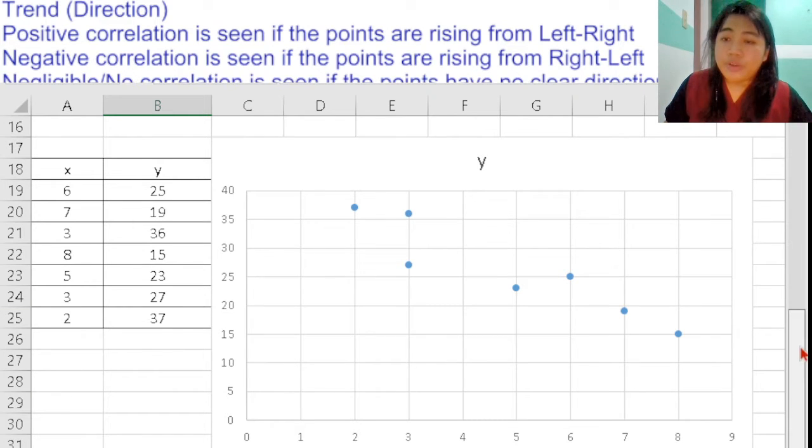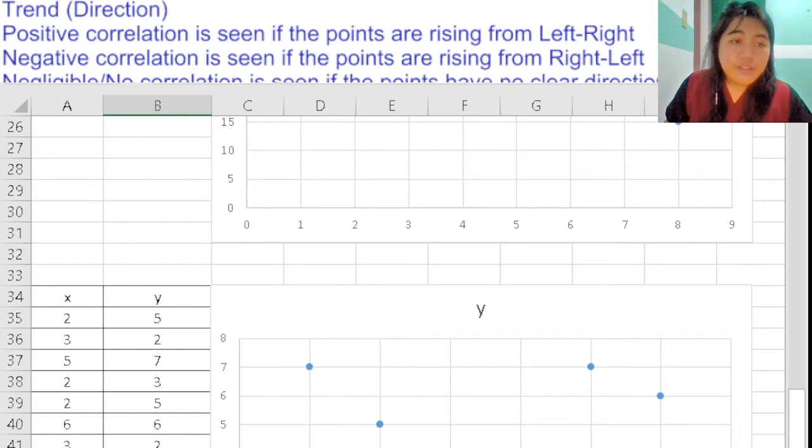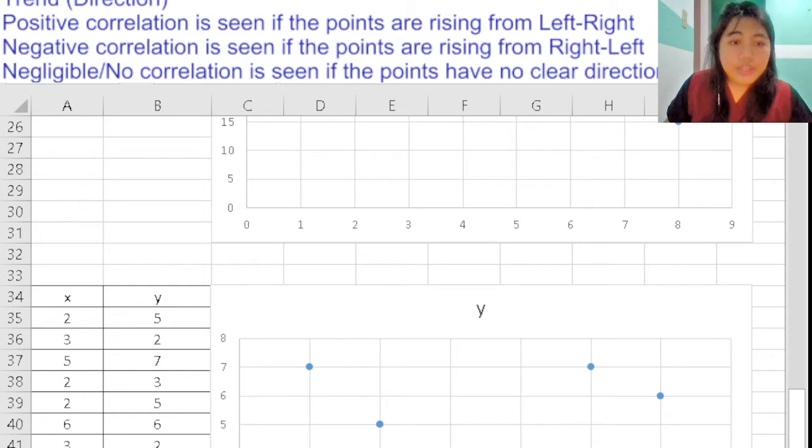When it comes to there being no correlation, you can see this in a scatterplot that is non-linear in form. There is no discerned or clear direction that you can observe in this scatterplot, so you can consider there being no or negligible correlation.